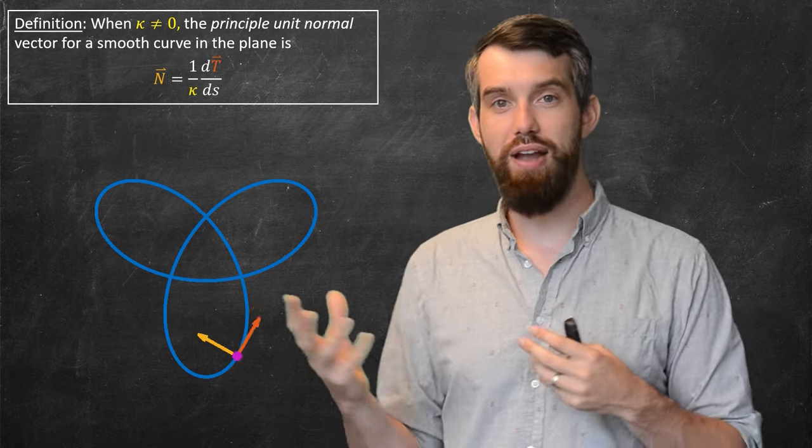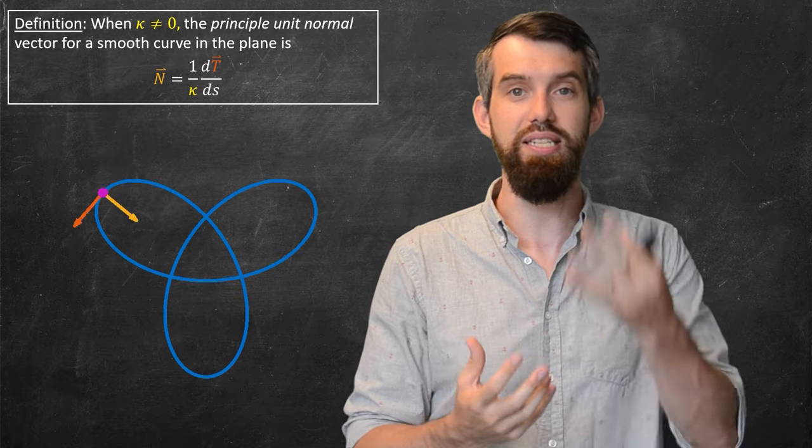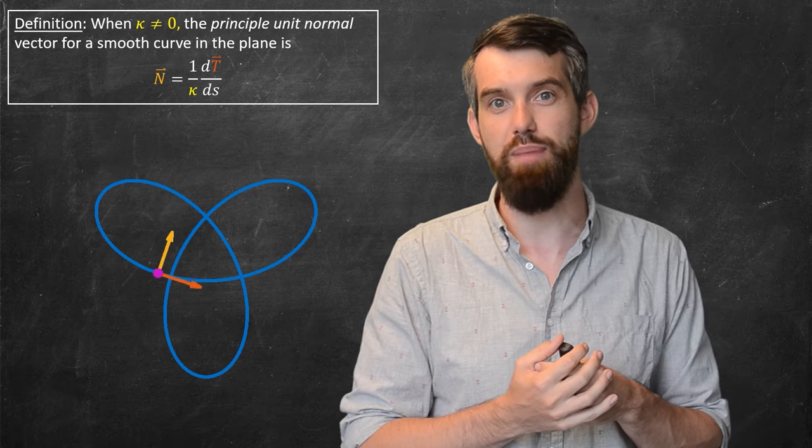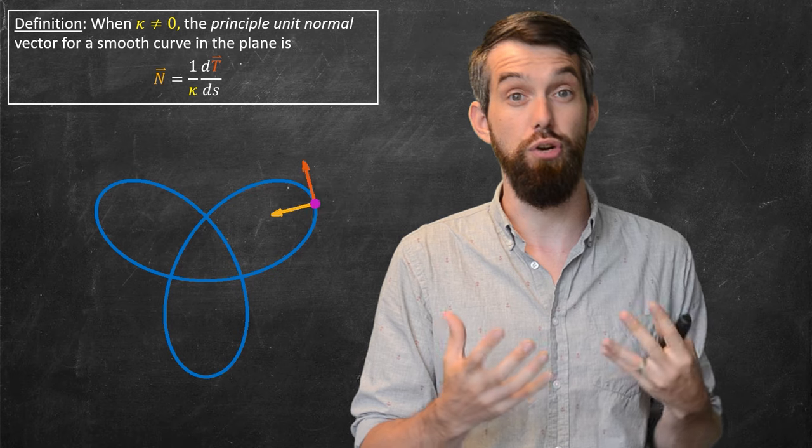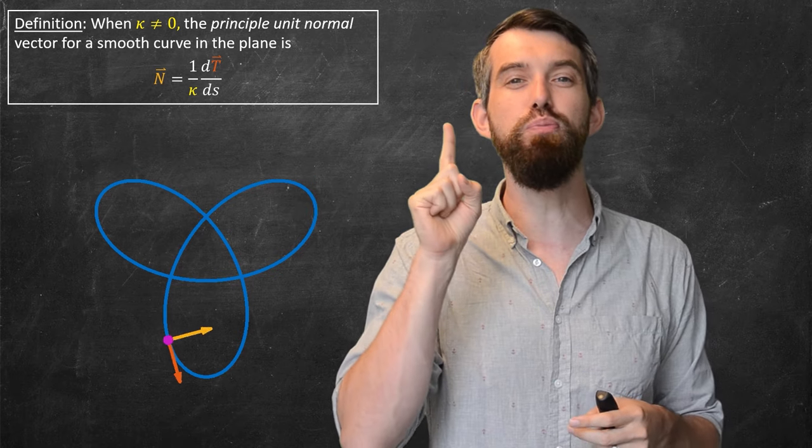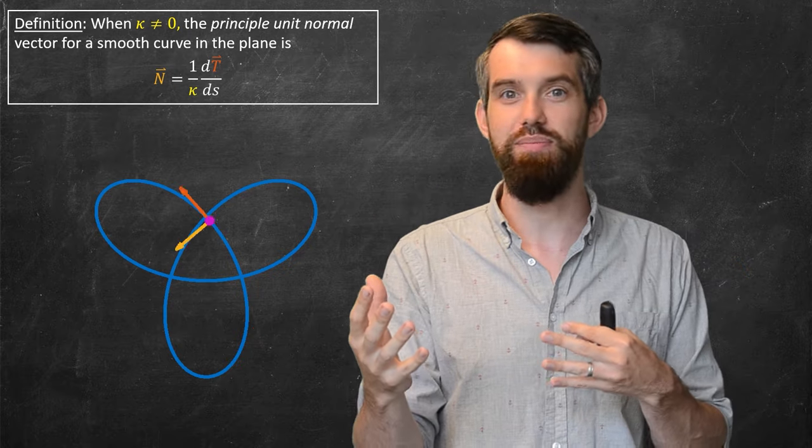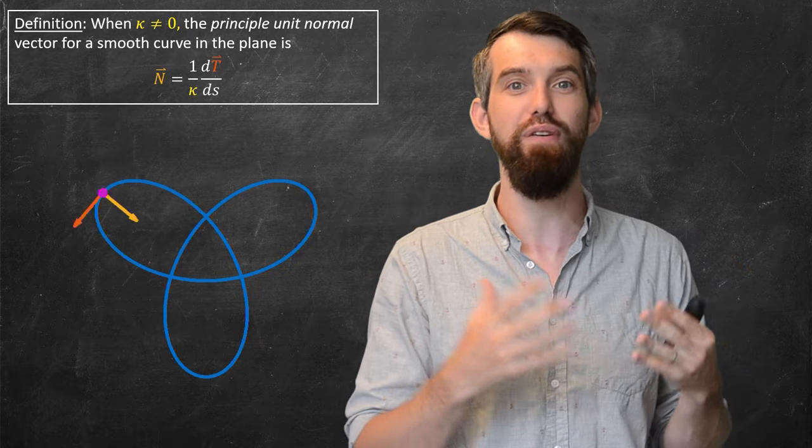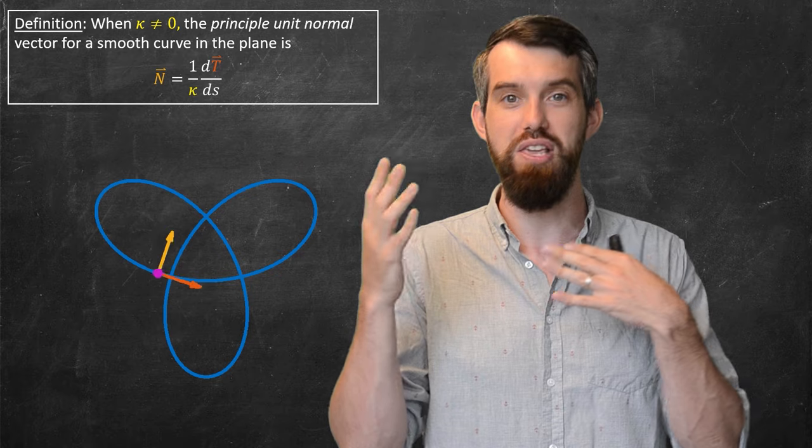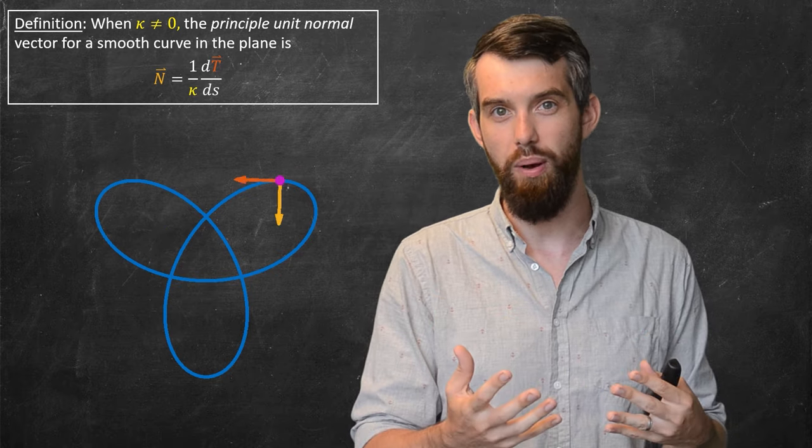Now, this normal vector is indeed a unit, because the length of this dT/ds was defined to be the curvature kappa, so I've taken its length and I've divided it out. So for sure it has unit length. I am going to skip one detail for you. I'm going to skip the proof that this normal is indeed a normal. It's a technical addition that follows from the fact that I am taking the derivative of a unit vector. Nevertheless, I get a principal unit normal.